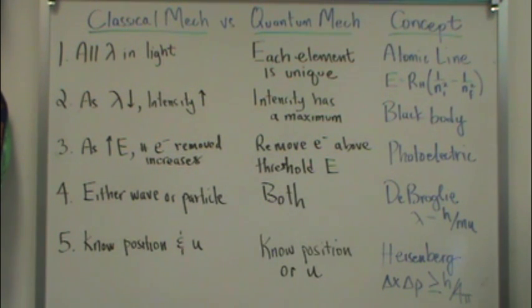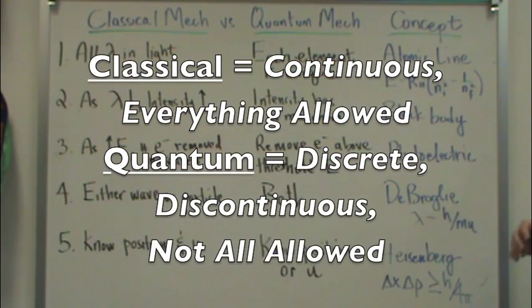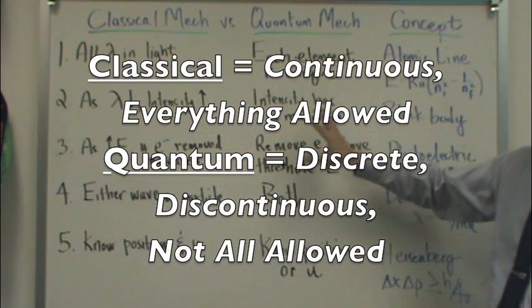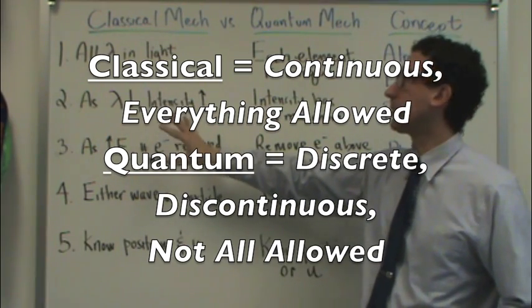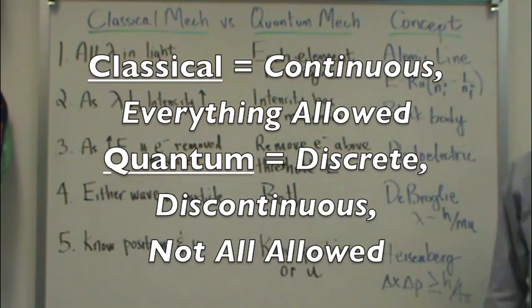So what classical says is that everything's possible, any energy is possible, and we can go over all those things. But quantum says, hey, actually not everything is possible. Some energies, some intensities are not possible, and only certain things are allowed. So quantum tends to be what's called discrete or discontinuous. Classical tends to be continuous, or everything allowed. I'm going to go through these five examples really briefly, but when you're in lecture, you're going to hear a lot more details about all these.